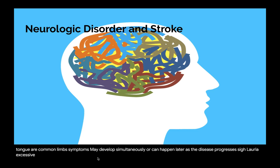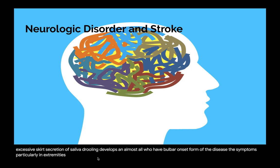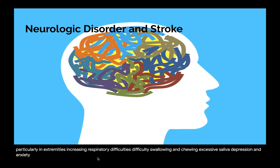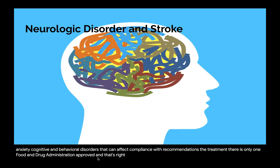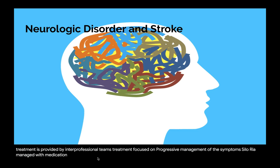Sialorrhea — excessive secretion of saliva and drooling — develops in almost all who have the bulbar onset form. Symptoms include cramps and spasticity, muscle weakness particularly in extremities, increasing respiratory difficulties, difficulty swallowing and chewing, excessive saliva, depression and anxiety, and cognitive and behavioral disorders that can affect compliance with recommendations. There is only one FDA-approved treatment (riluzole), which extends survival by only about 2 months. Palliative treatment is provided by interprofessional teams. Sialorrhea is managed with medications, but in later stages treatment can include radiation or Botox injections into the salivary glands.